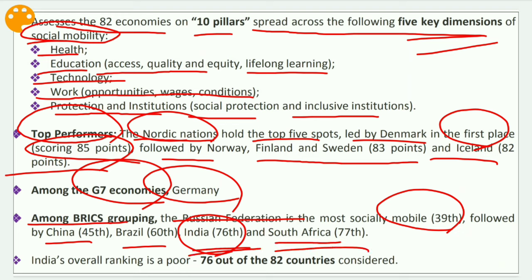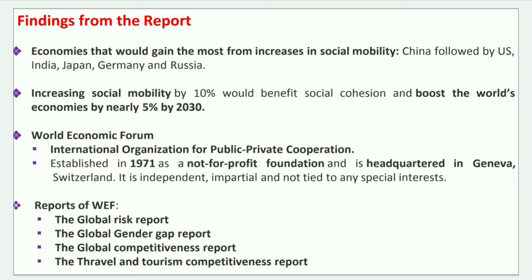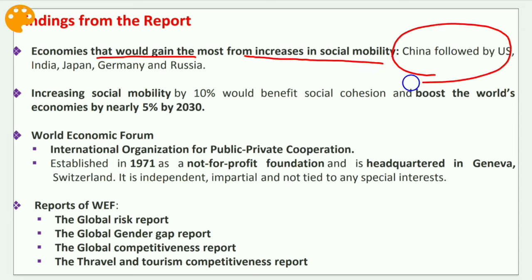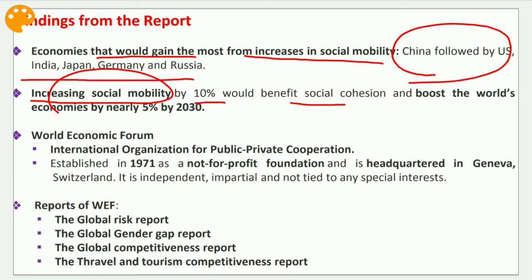South Africa is 77th, and India is 76th. India's rank is very important to remember from an exam perspective. India's overall ranking is poor — 76 out of 82 countries considered. Economies that would gain the most from increases in social mobility include China, the US, India, Japan, Germany, and Russia. Increasing social mobility by 10% would benefit social cohesion and boost the world's economies by nearly 5% by 2030.